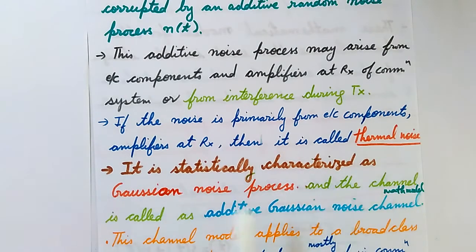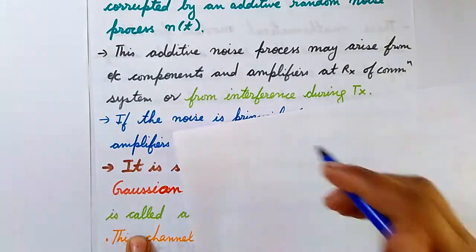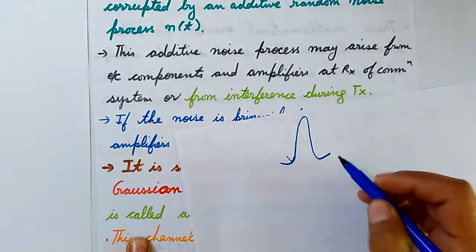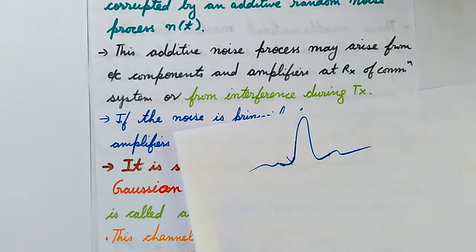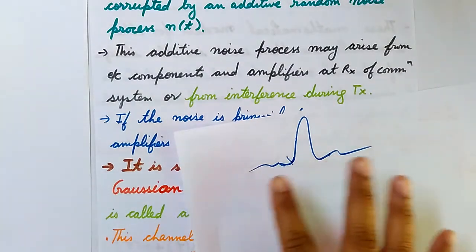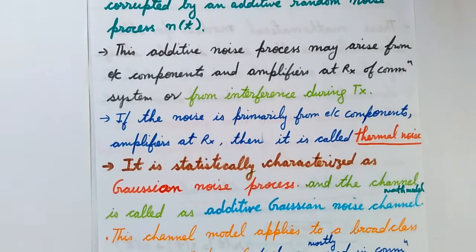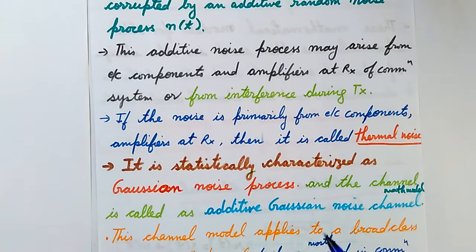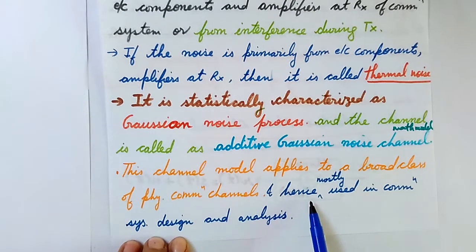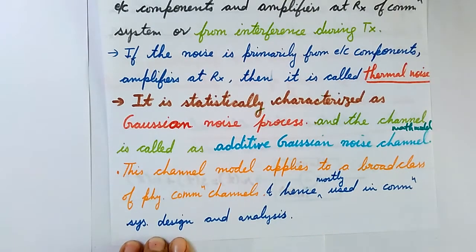For a Gaussian noise process, the spectrum has a peak in the center and then very small values on either side — this is the Gaussian wave shape. This thermal noise is characterized as a Gaussian noise process, and the mathematical channel model defined for this is called the Additive Gaussian Noise channel. This channel model applies to a broad class of physical communication channels, and hence it is mostly used in communication design and analysis.